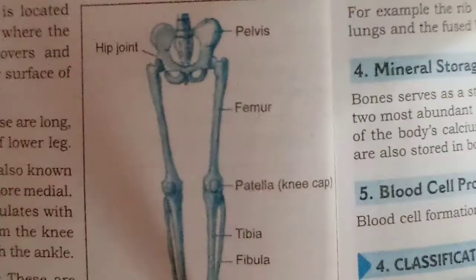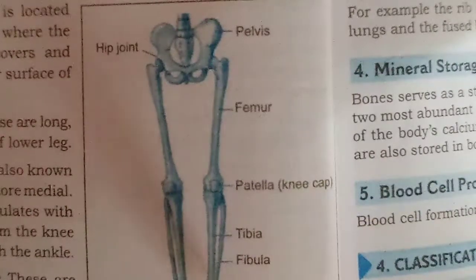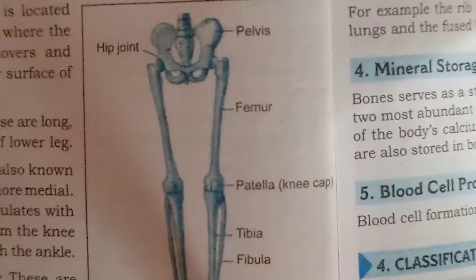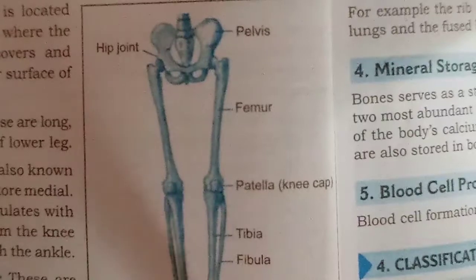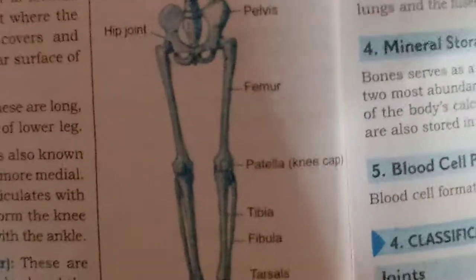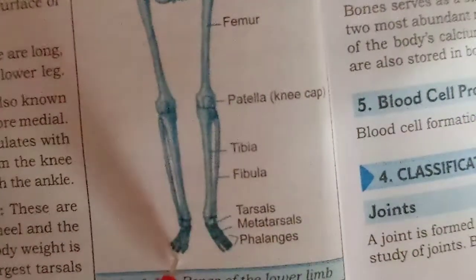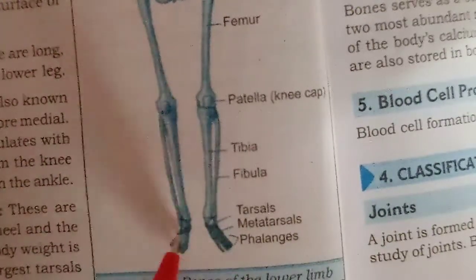Next we have the tarsals — 14 in number. These form the joints from the feet to the toes and are also called ankle bones. They cover the heel and the upper part of the foot. There are two largest tarsals among them.